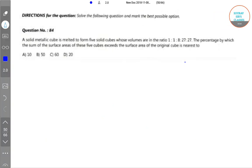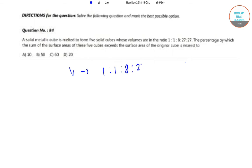The next question is: a solid metallic cube is melted to form 5 solid cubes whose volumes are in the ratio 1 is to 1 is to 8 is to 27 is to 27. So volumes are in the ratio 1:1:8:27:27.